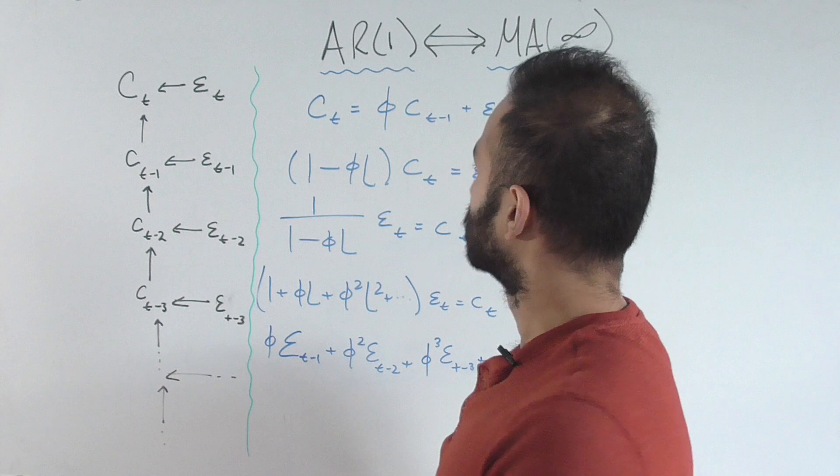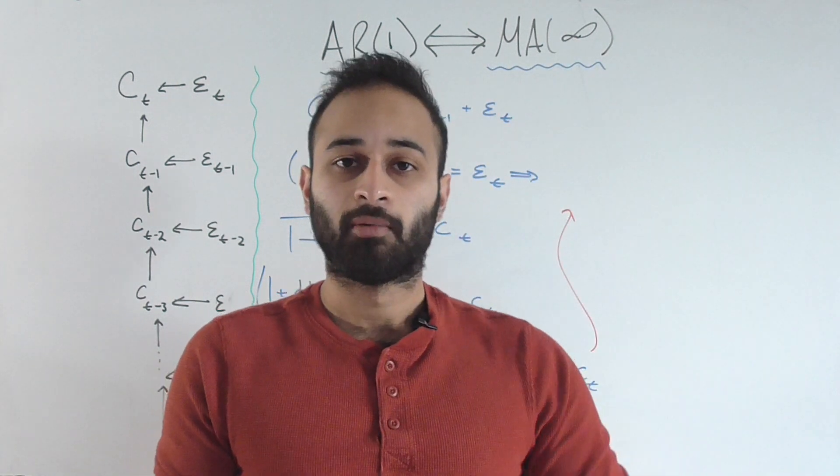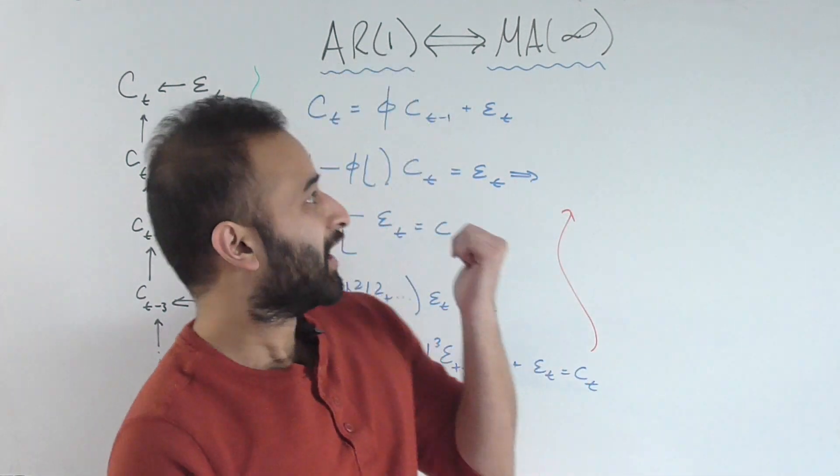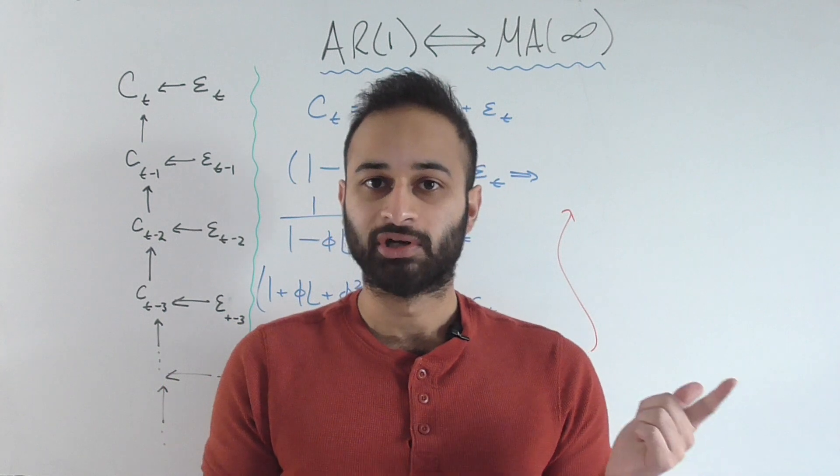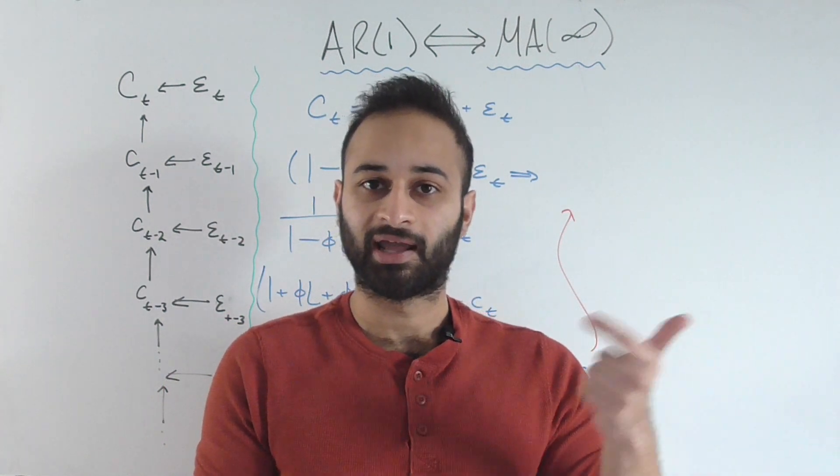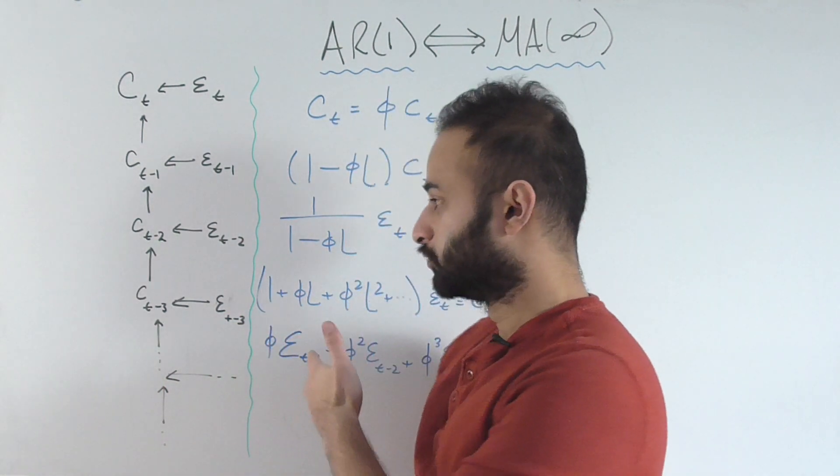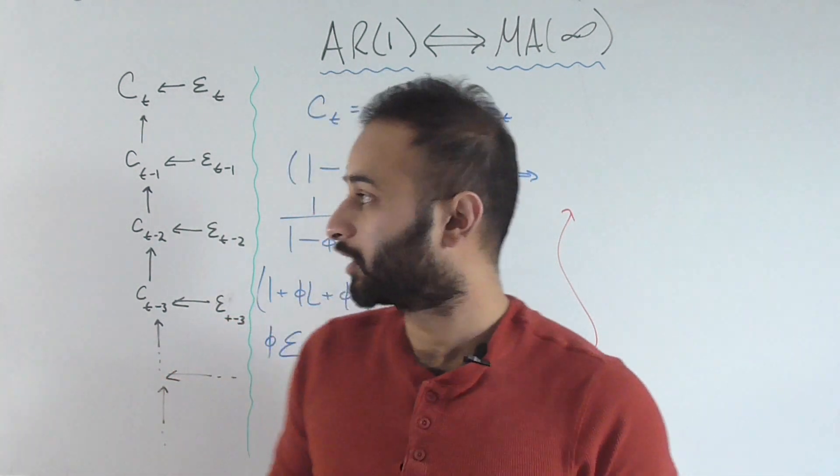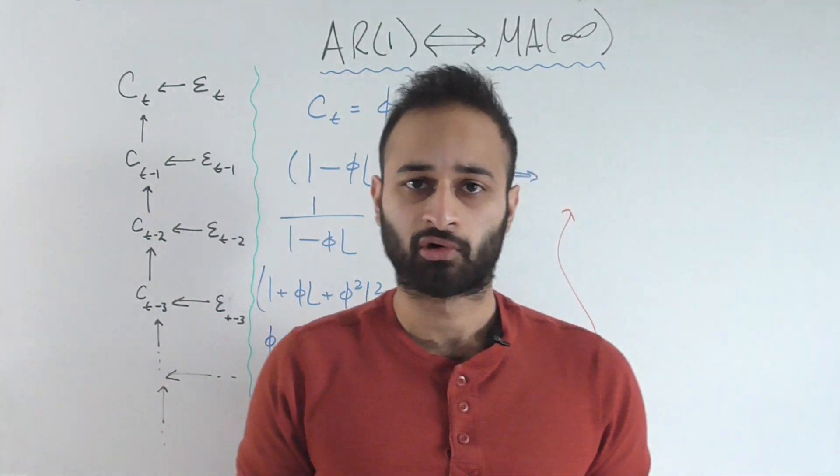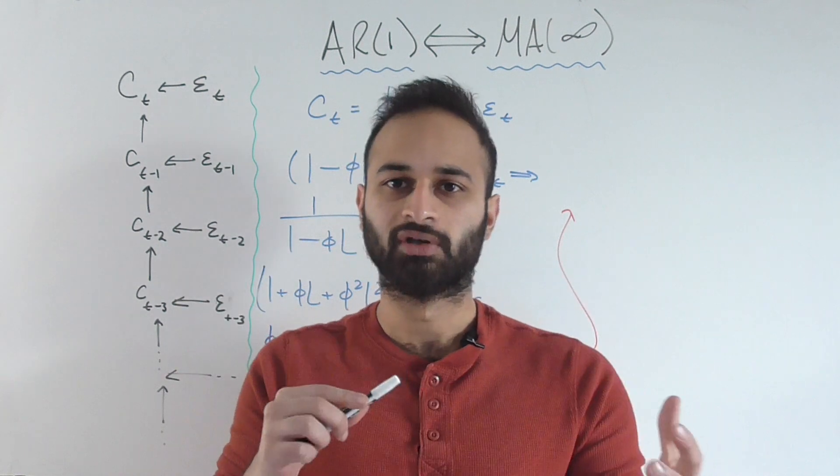The reverse direction is that an AR1 process is the same thing as an MA infinity process. We just flip the orders in the MA and AR, and I'm going to prove that using this mathematical formulation and then the causal function tree to understand it more intuitively.